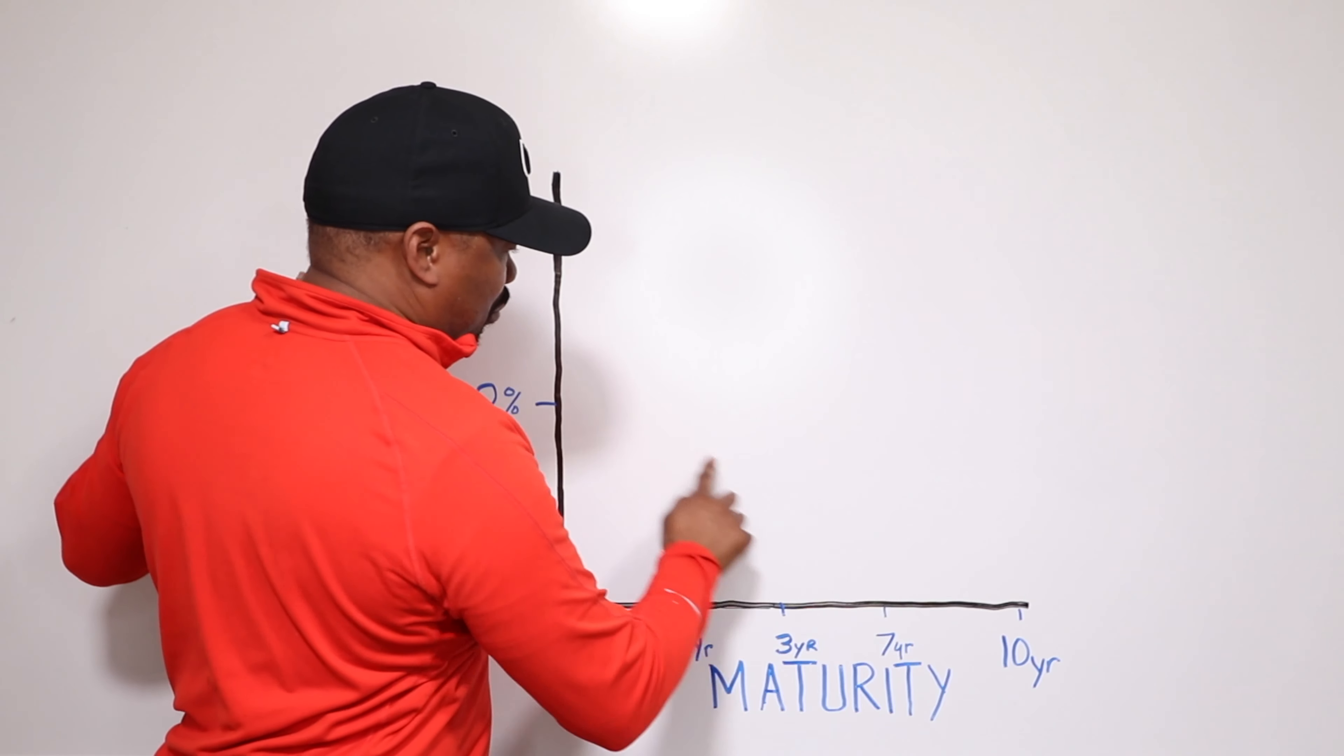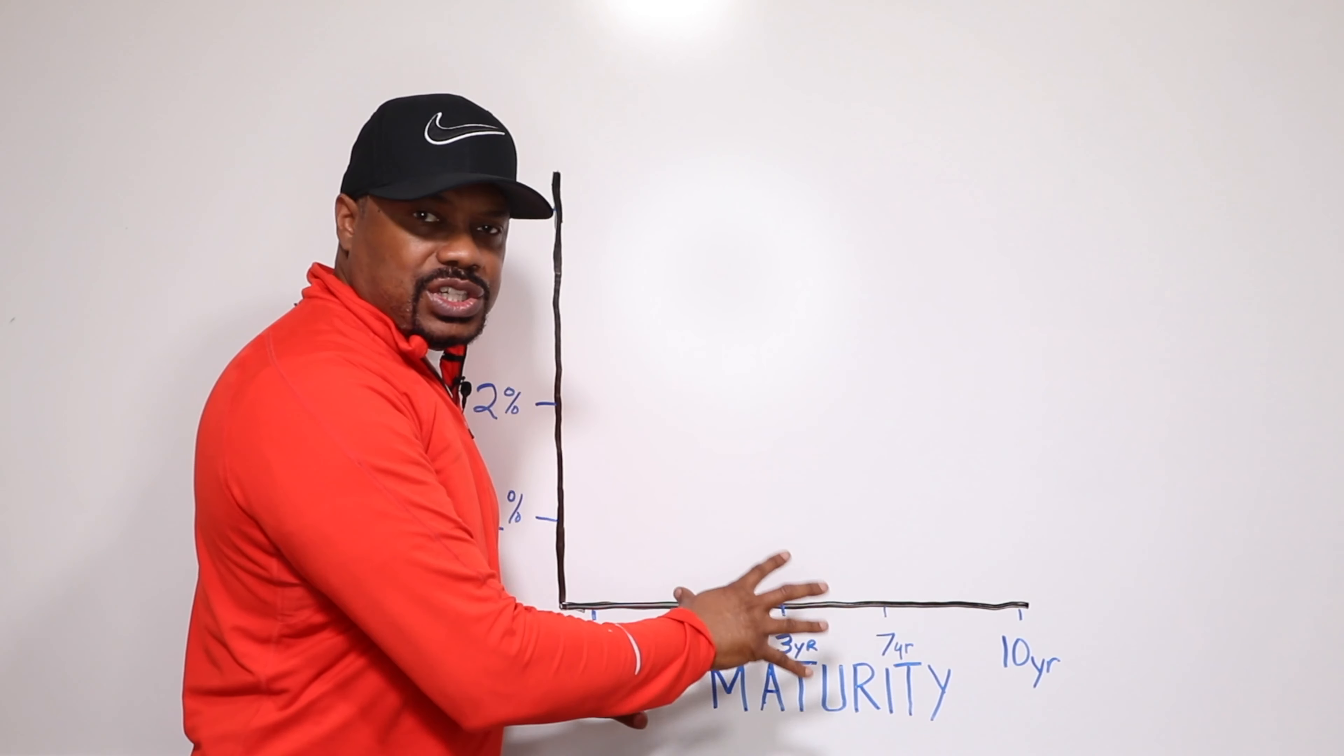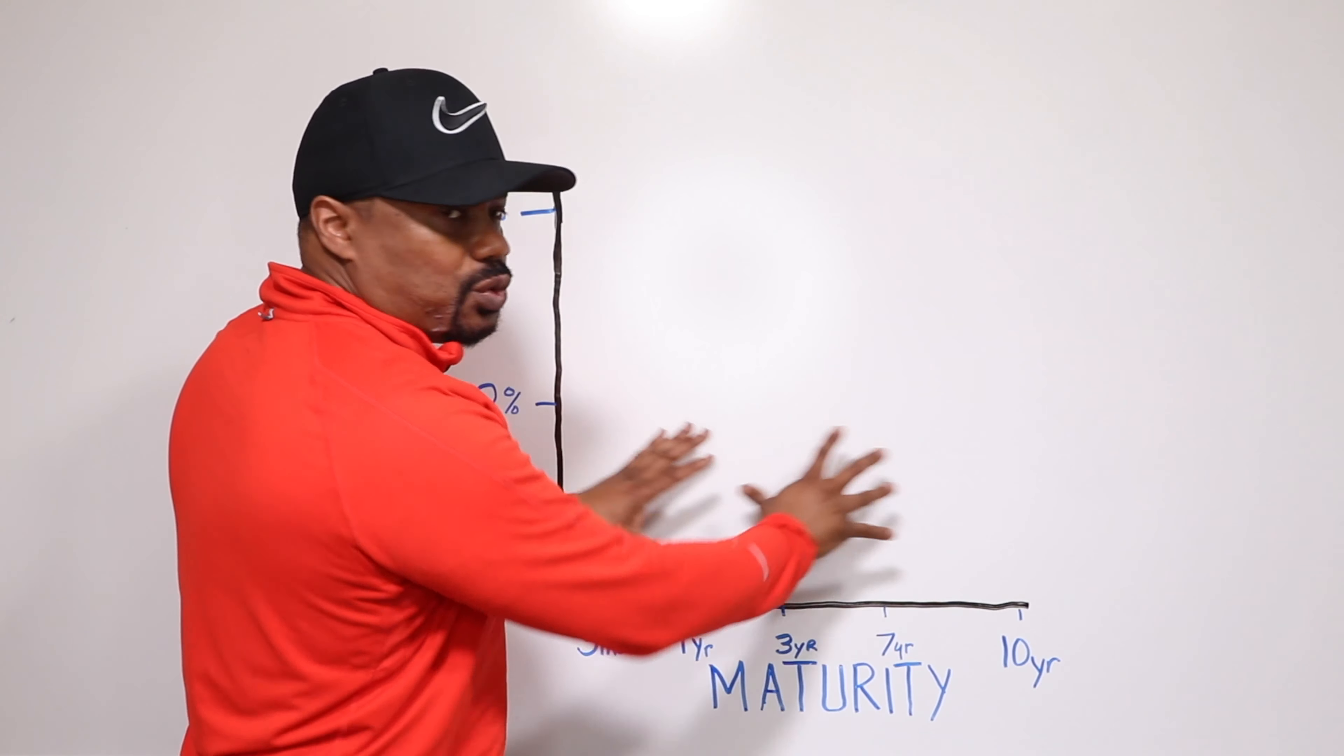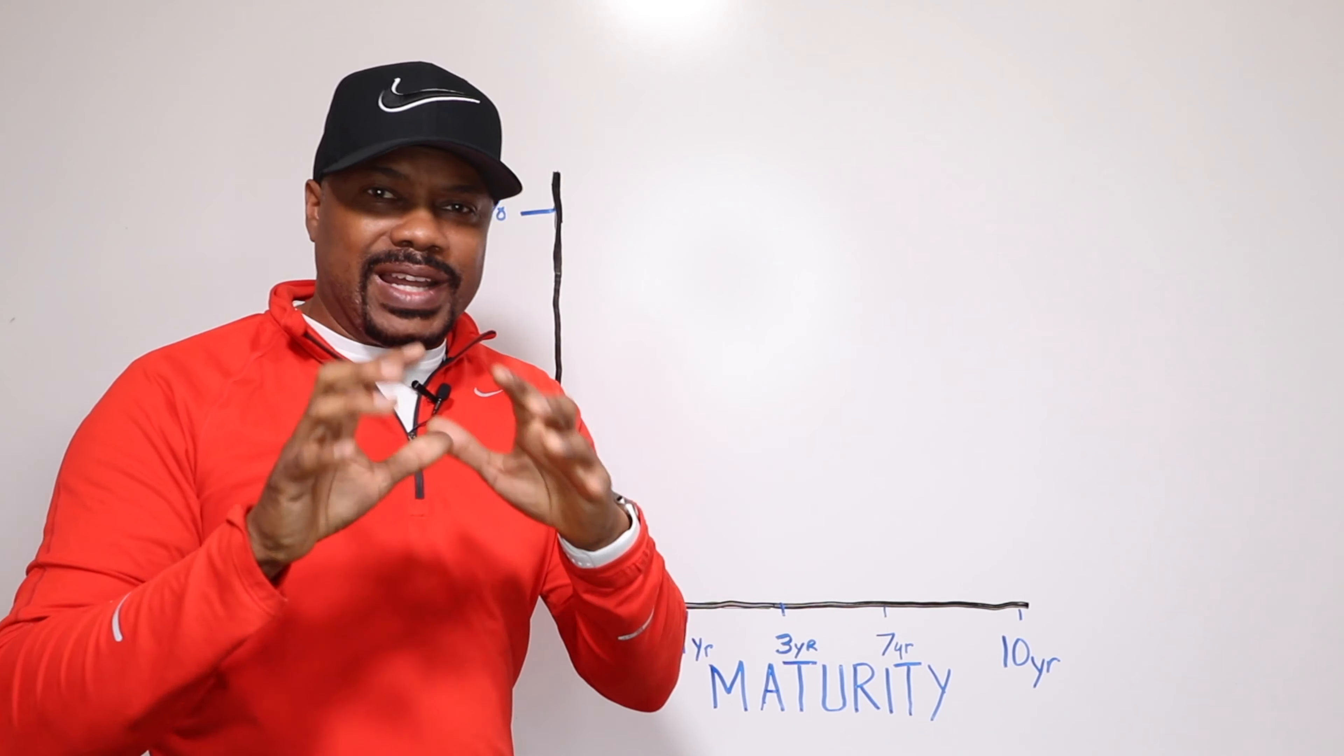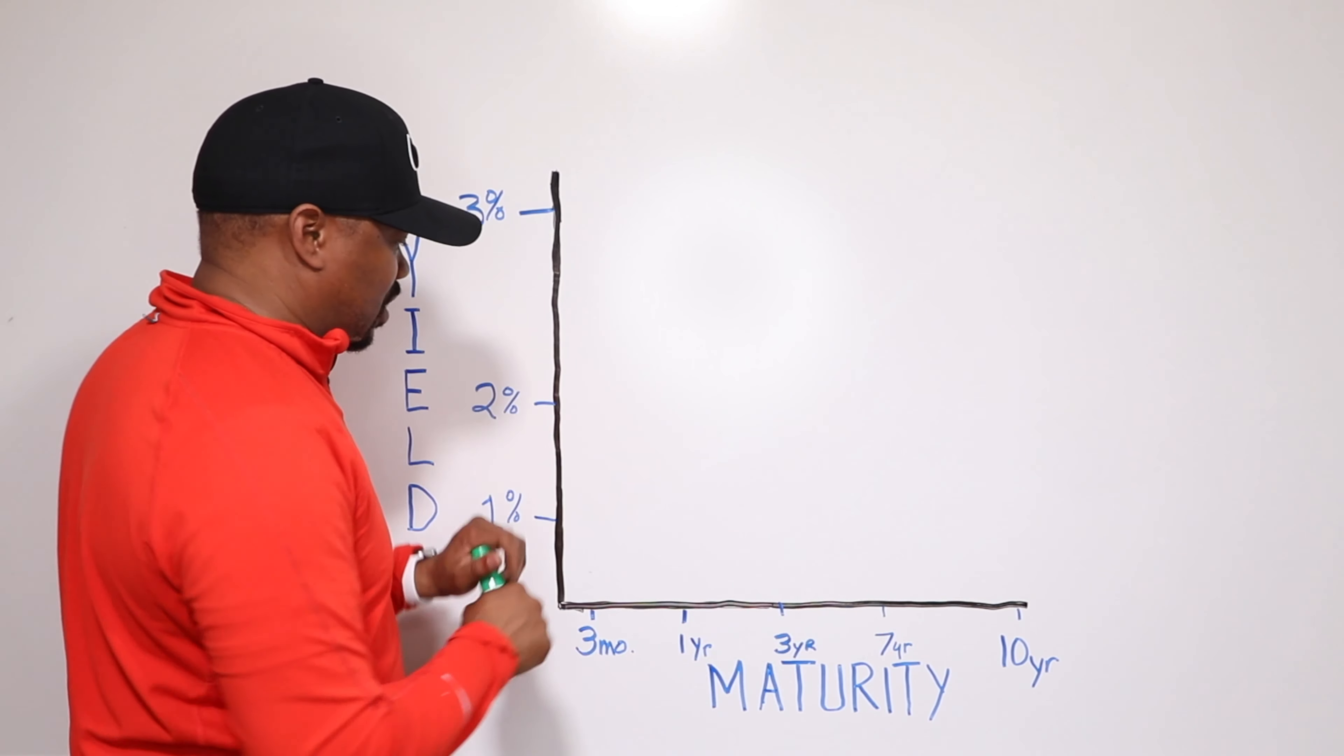So what exactly is a yield curve? It's a line plotting across yields, right, across maturities. And when we're talking about maturities, we're talking about the age of these T-bills. As they age, how that's being affected across this graph.